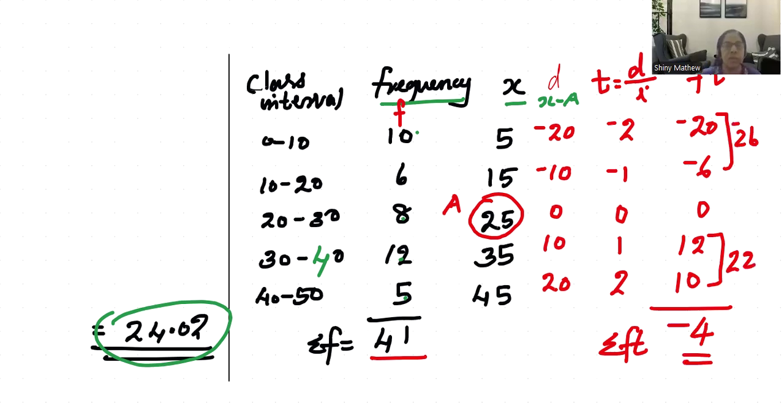In step deviation method, the formula is x̄ = a + (Σfd'/Σf) × i. The value of i is 10.